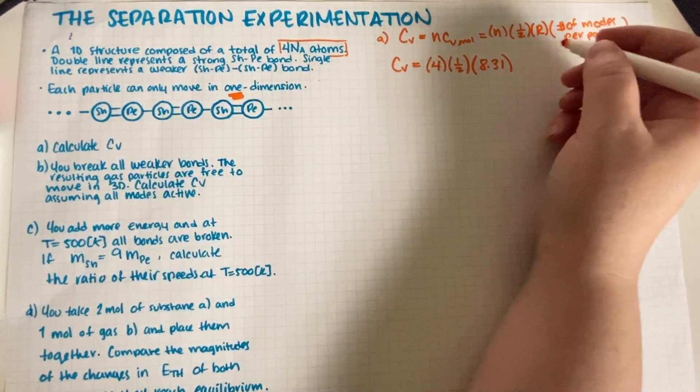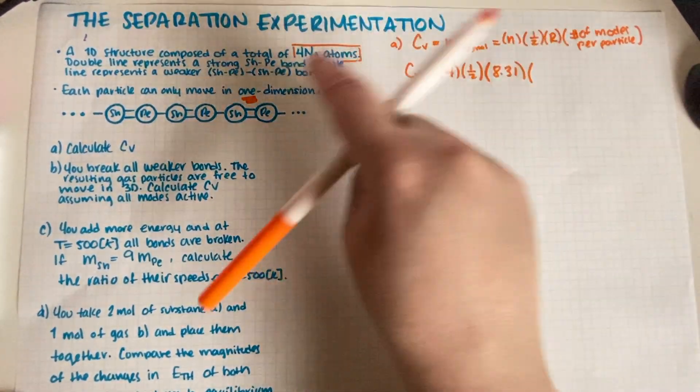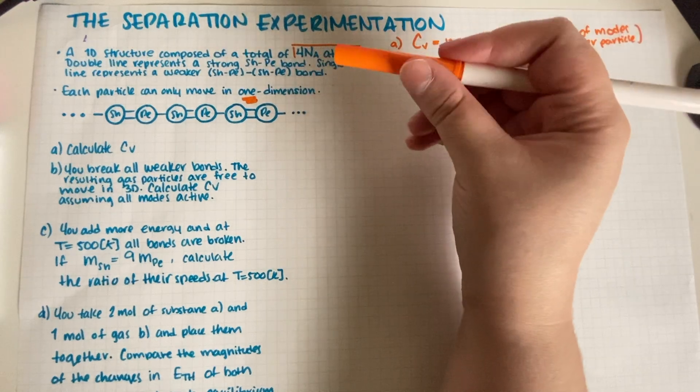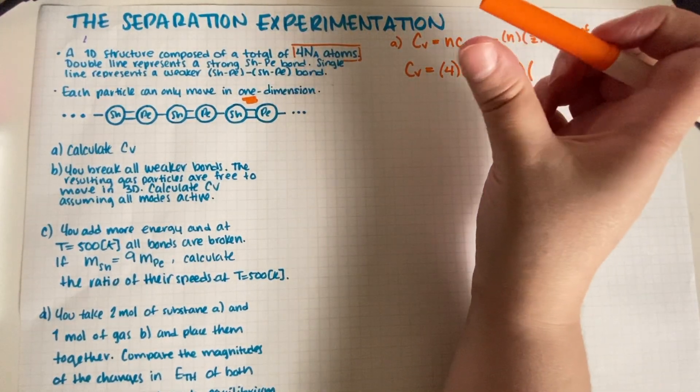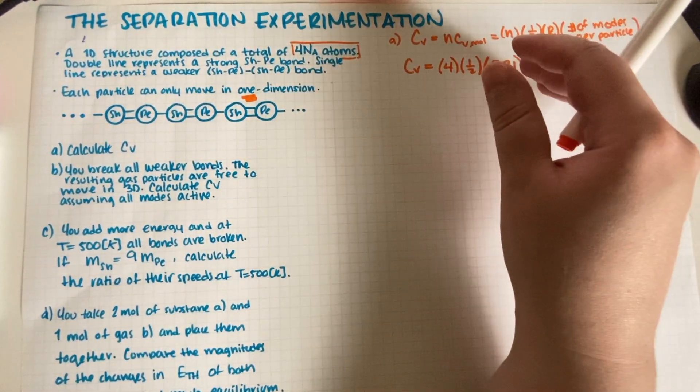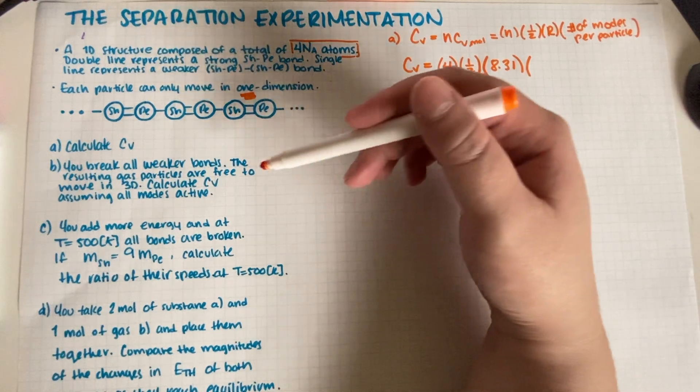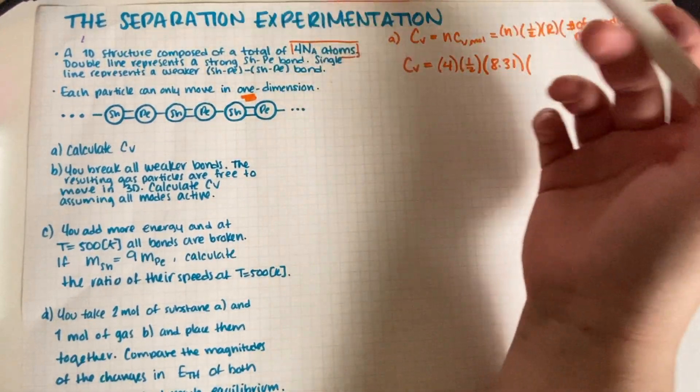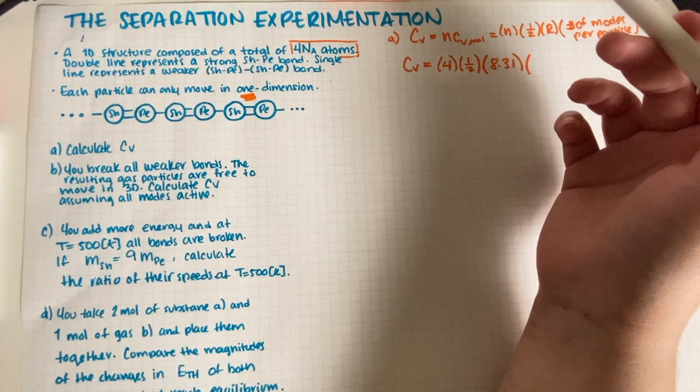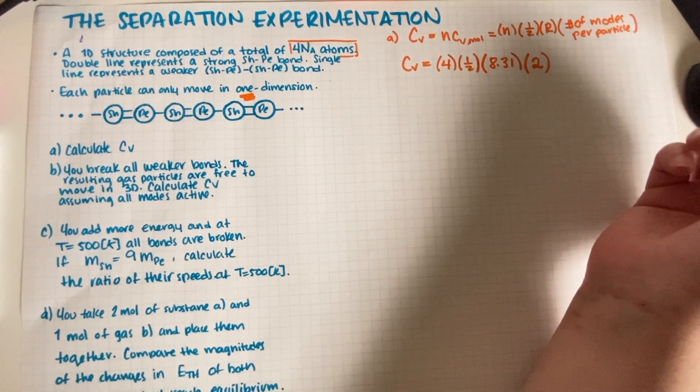Remember the PDF version of the quizzes is available to you. The number of modes per particle we have to figure out. First of all, this is a solid, so solids only have vibrational energy modes. Usually we say okay, this is a solid so it must be six. However, the logic behind the six is that we have vibration, and then it's two per dimension. However, this solid is only one-dimensional, not three-dimensional, which means that instead of having six total modes, we're only going to have two modes.